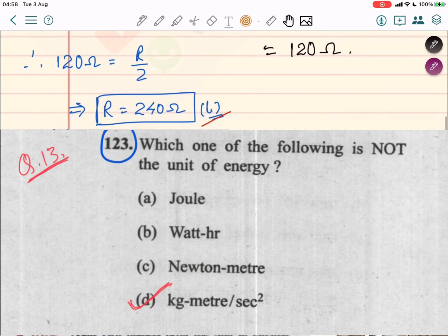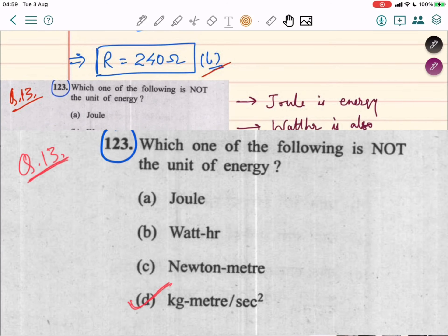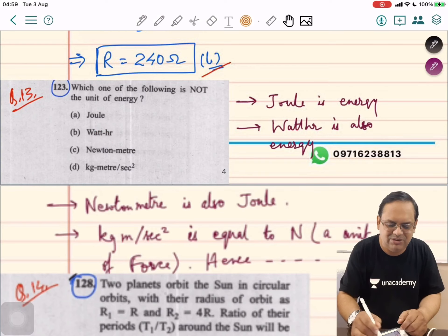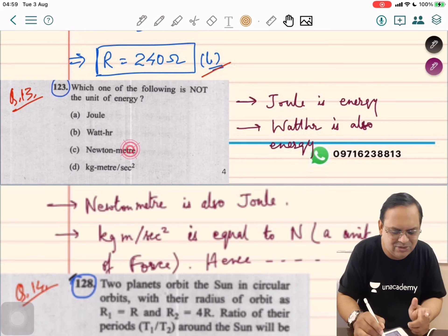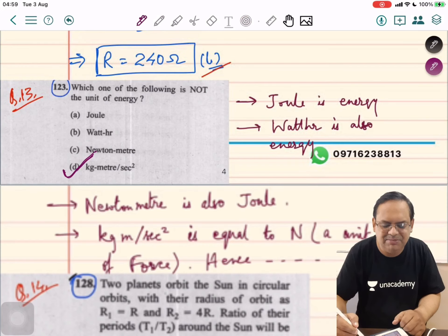Question 13, which one of the following is not the unit of energy? Kilowatt hour is an energy unit. Newton meter is also joule, so the third option is also out of the way. Fourth option, kilogram meter per second squared, is actually a force unit. Option D is correct.